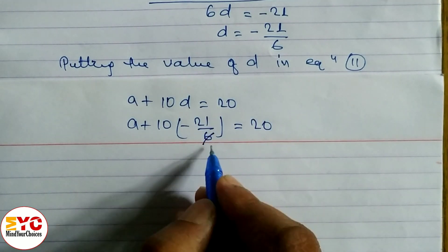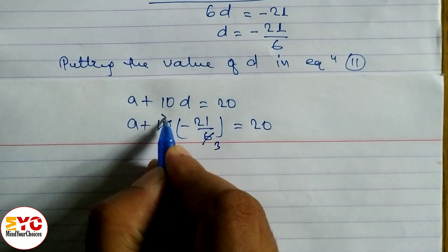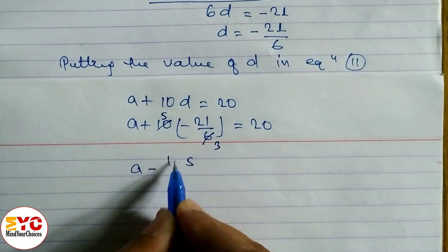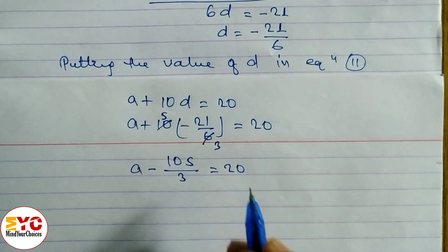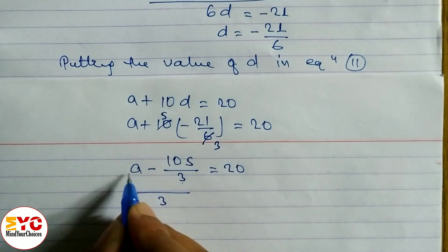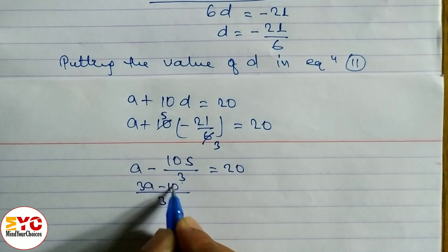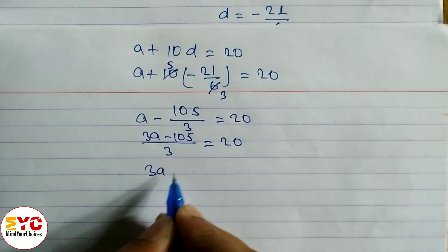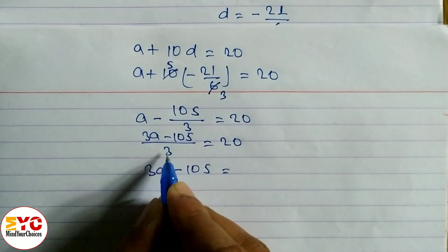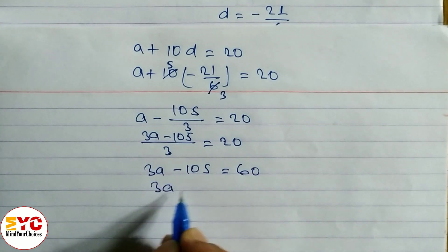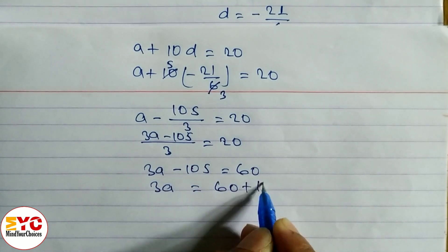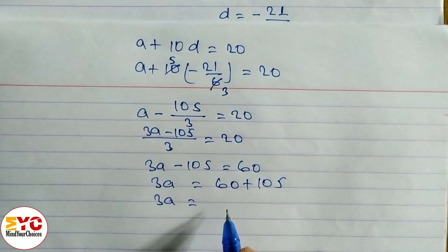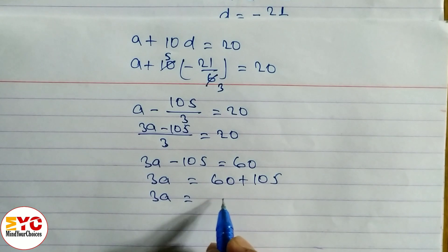Calculating: 10 times minus 21 by 6 simplifies — 2 threes are 6, so 2 fives are 10 — giving minus 35 by 3. So A minus 35 by 3 equals 20. Taking LCM of 3: 3A minus 105 equals 60. Therefore 3A equals 60 plus 105, giving 3A equals 165.